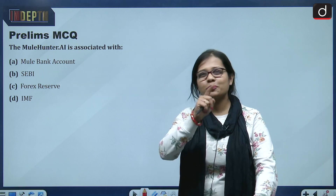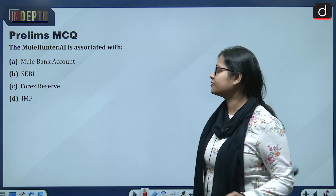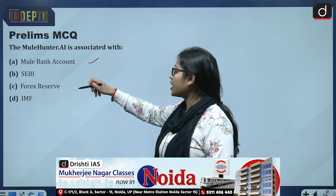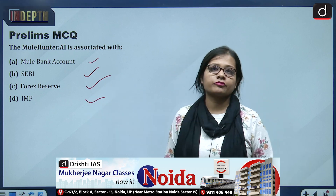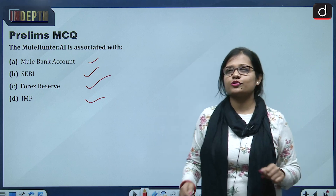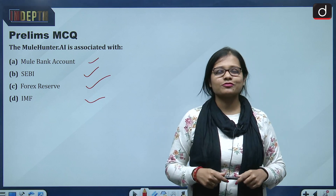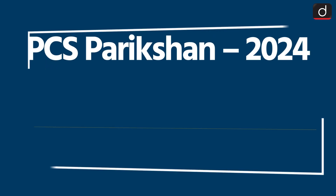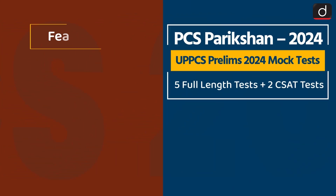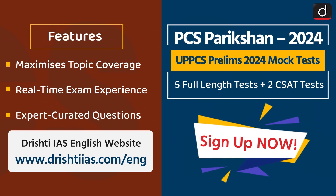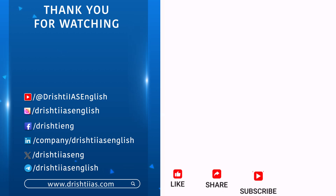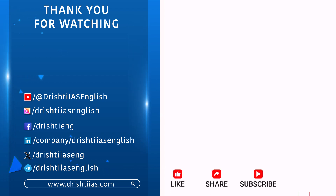Finally, a prelims MCQ practice question: MuleHunter.ai is associated with — mule bank account, SEBI, forex reserve, or IMF? As we have discussed this in the video, it becomes an easy question for you to answer. Give the answer in the comment section. That's all for today — thank you so much for watching. Till we meet next time, keep reading, keep writing, and keep subscribing to the channel. For more informative content, like, share, and subscribe, and do not forget to press the bell icon to get notifications.